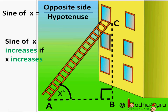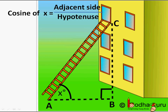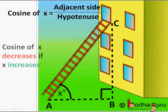And vice versa — if angle X decreases, the ratio sine of X decreases. The same way, cosine of X equals adjacent side AB by hypotenuse AC. The hypotenuse AC remains the same whether you move the ladder towards or away from the wall, but the adjacent side changes. So if we increase angle X, the adjacent side AB is decreasing, hence cosine of X decreases as angle X increases.